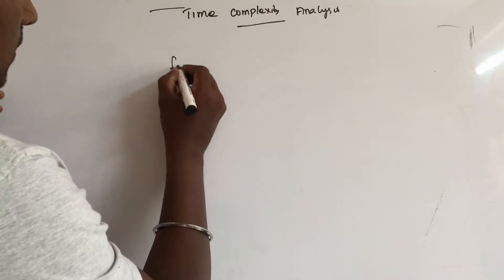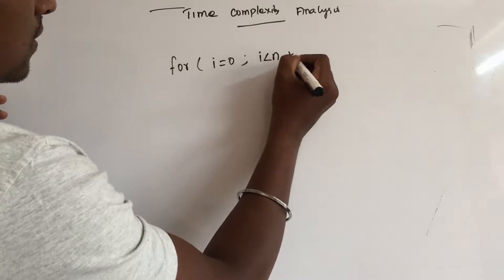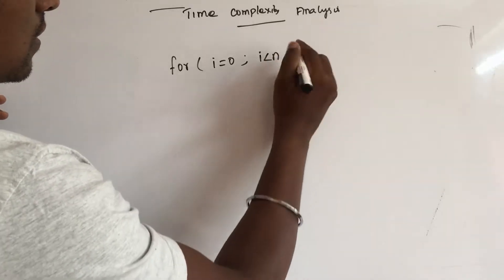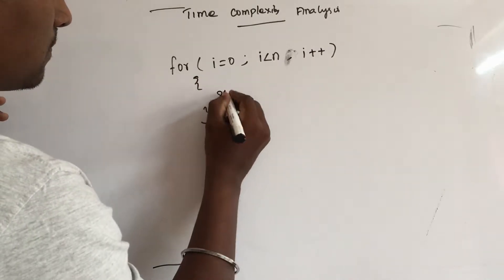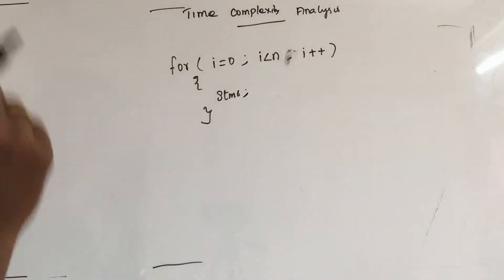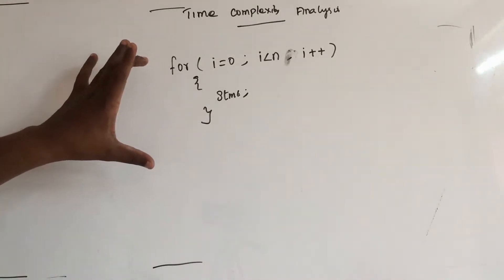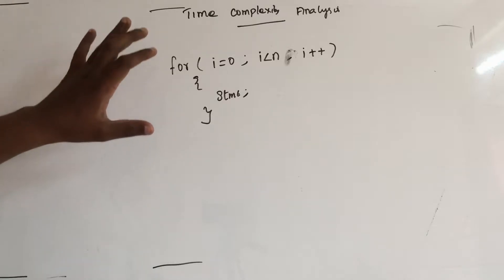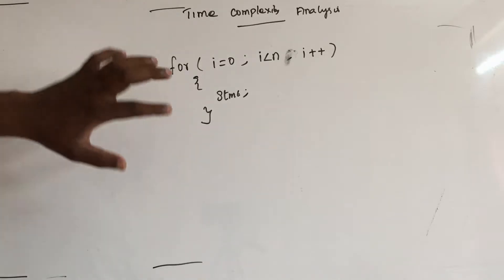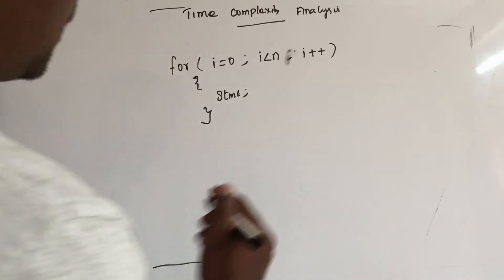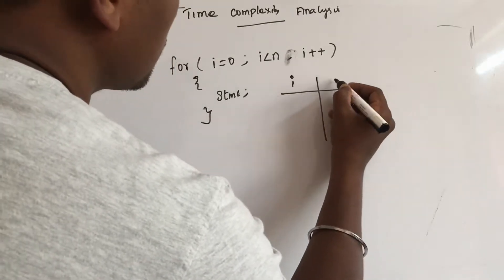So we will take a for loop. Let's do i equal to 0, i less than n, i plus plus — one statement. So suppose if you understand this and if you can see this, we can easily understand and explain this. For example, let's get to know the number of statements.